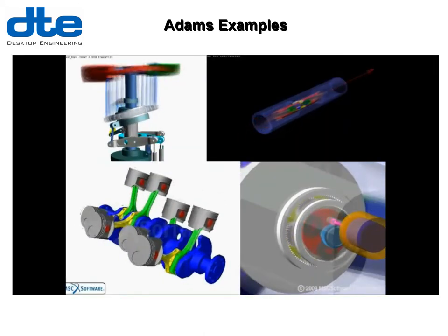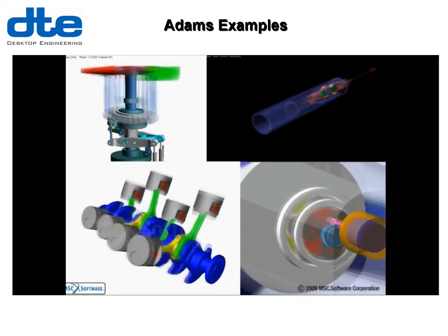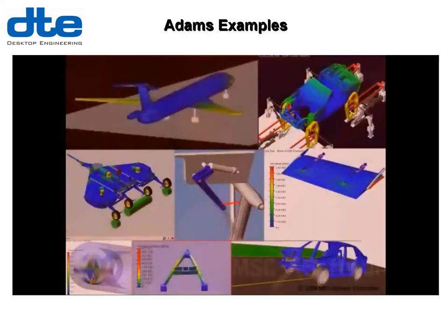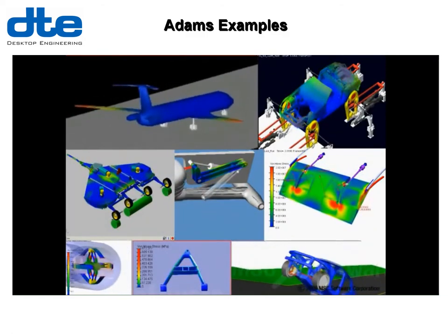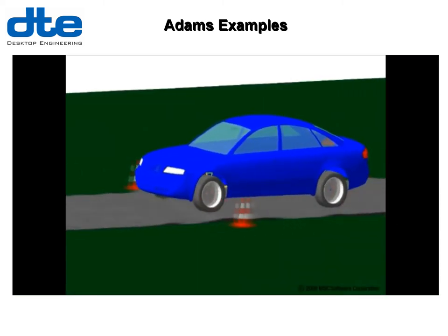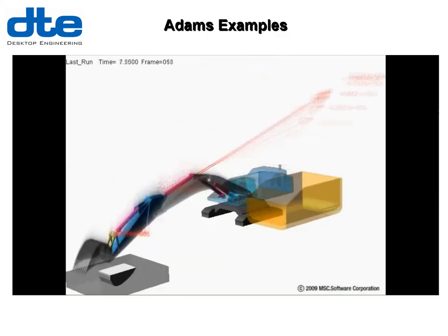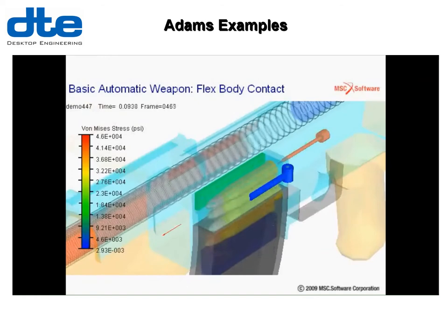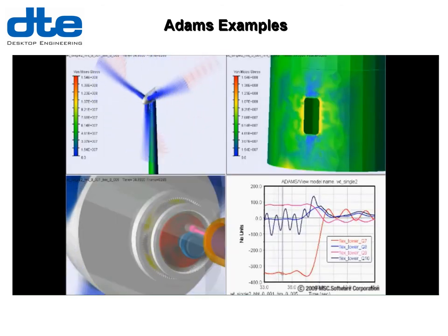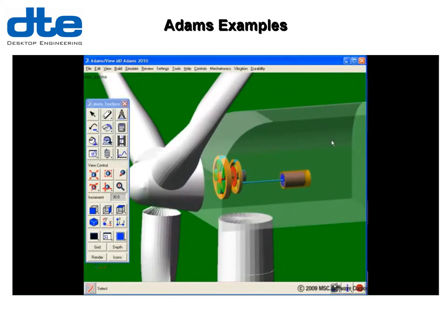Some ADAMS examples: a helicopter rotor, a pipeline inspection robot from the oil industry, an engine and a gearbox, an automotive test bed, an assembly robot, a digger, and aircraft controls. And some examples with flexible bodies — all reduced from Nastran so based on FEA — including drop testing of aircraft landing gear, a washing machine with an unbalanced load, a digger showing load build-up, a mechanism from inside a rifle, and a wind turbine with flexible blades looking at loads on the gearbox, which is the particularly sensitive part where most failures occur.